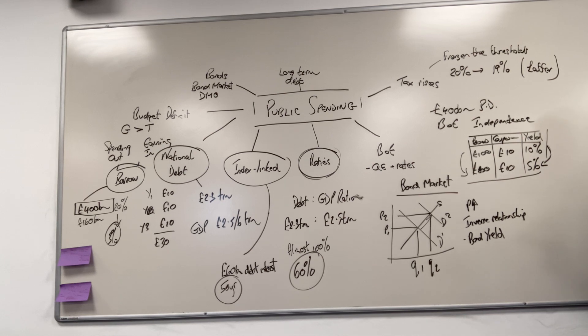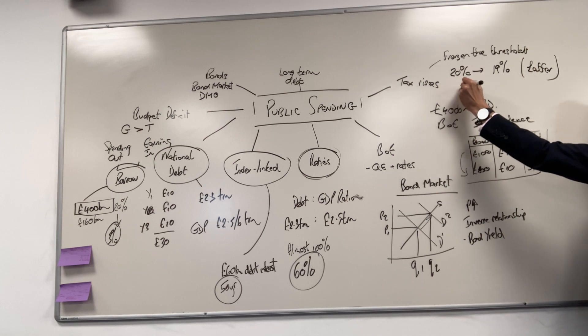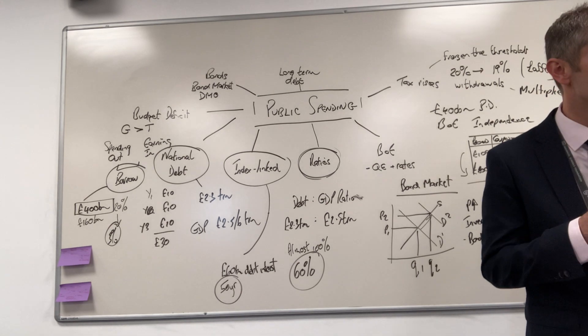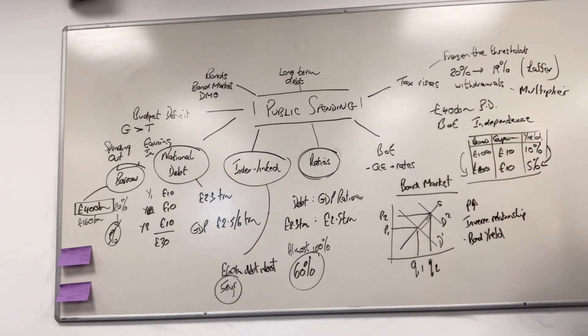Tax rises, if you think of your circular flow of income, are withdrawals from the circular flow. So essentially they're contractionary. Dylan, what do they also do? This is a great opportunity to think about the multiplier as well. When you withdraw more money, what's going to happen to the value of the multiplier? Correct, it's going to decrease, and therefore any injections will not have that larger multiplier effect.